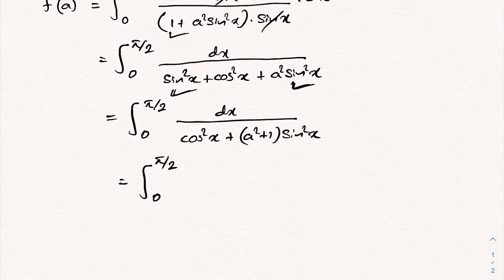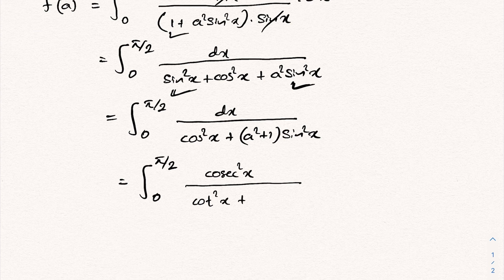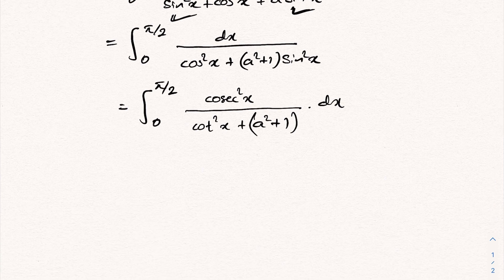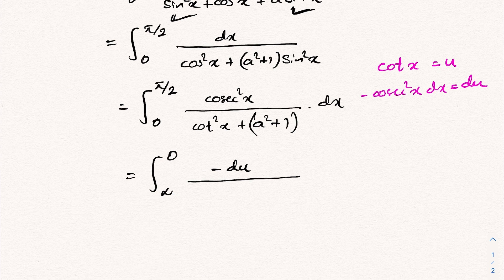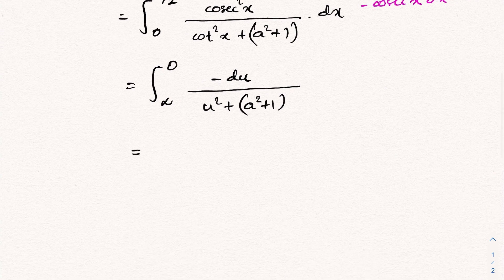Dividing numerator and denominator by sin²x, we get csc²x/(cot²x + a² + 1) dx. To solve this, I take the substitution cot x = u, so −csc²x dx = du. Changing limits: as x goes from 0 to π/2, u goes from ∞ to 0, and we plug in csc²x dx = −du.